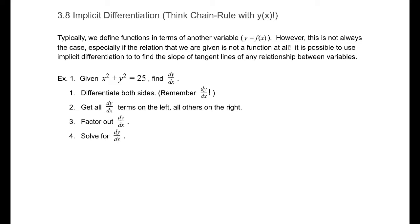Typically we define functions in terms of another variable, y equals f of x. This is not always the case, especially if the relation we're given is not a function. It is possible to use implicit differentiation to find the slope of tangent lines of any relationship between variables.